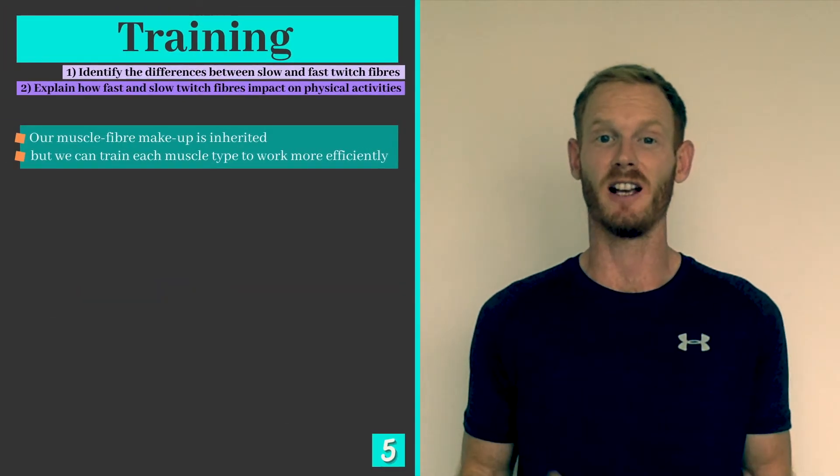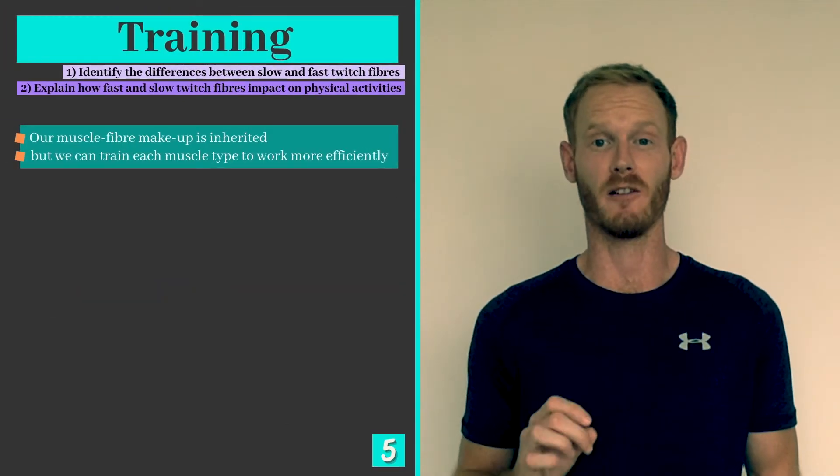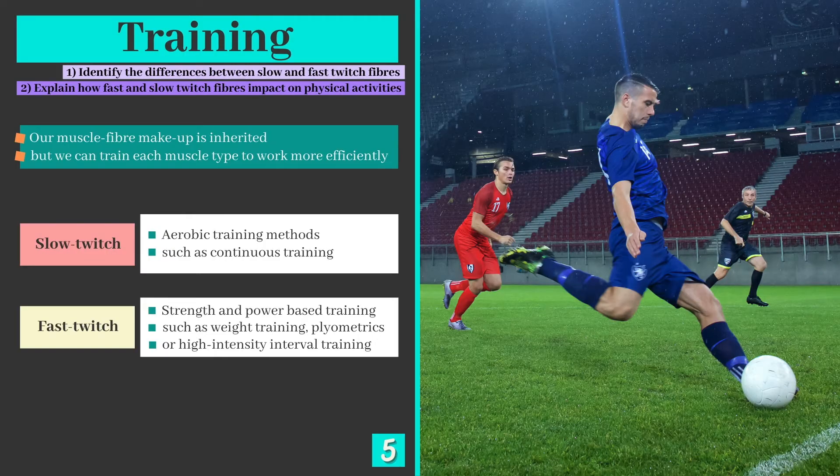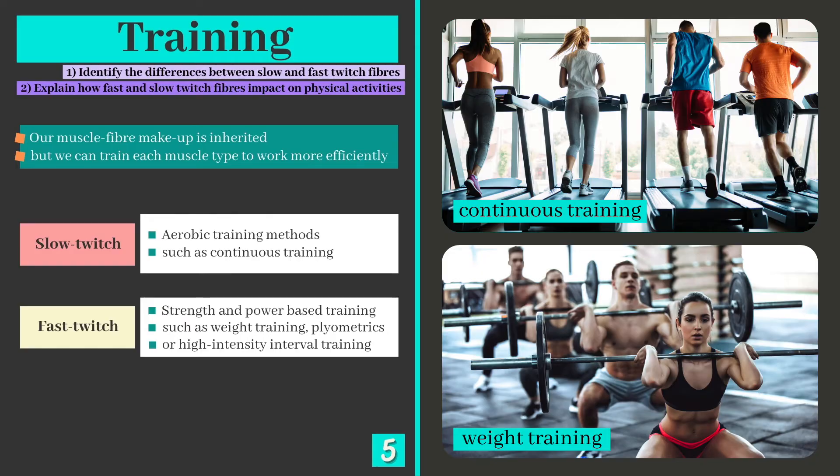Although we inherit our muscle fiber makeup from our parents, it is possible to train each muscle fiber type to work more efficiently. Team games such as football combine aerobic exercise with regular anaerobic bursts. Footballers may therefore choose to develop their slow twitch and fast twitch muscle fibers by using a combination of aerobic and strength or power based training methods.